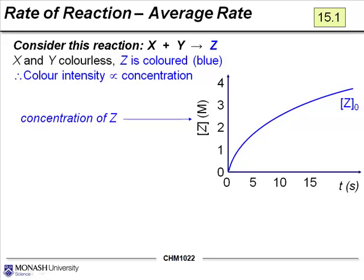If we were to make some sort of plot which plots the change in the concentration of Z as time increases, you can see it might look like something like this. As time increases, concentration of Z on the Y axis is slowly increasing. It's not a straight line. That's probably not surprising as the reaction goes on. You're starting to run out of reactants, then you cannot make Z as quickly. The reaction slows down.